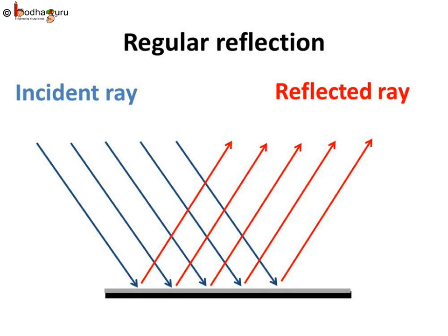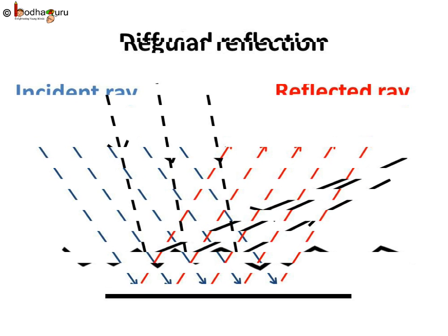So, regular reflection takes place when light is incident on smooth, polished and regular surfaces.